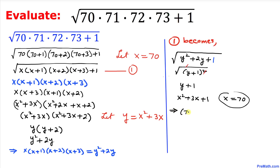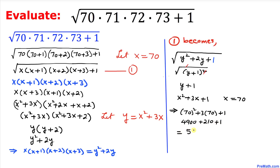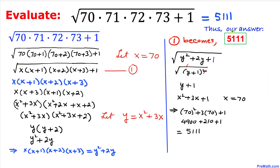The rest is easy: 70² equals 4900, plus 3×70 which is 210, plus 1. Adding them up gives us 5,111. So our final answer is 5,111. Thanks for watching, and please don't forget to subscribe to my channel for more exciting videos!